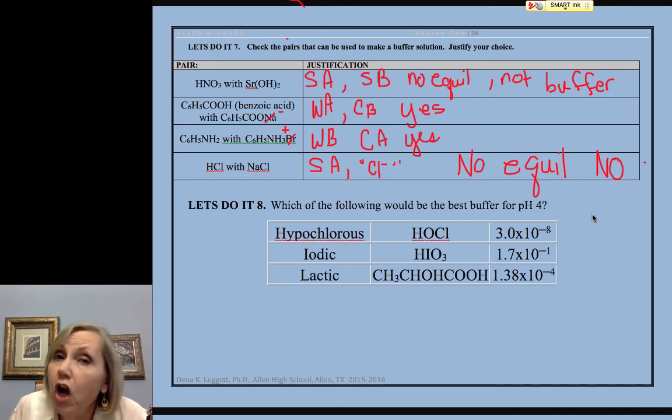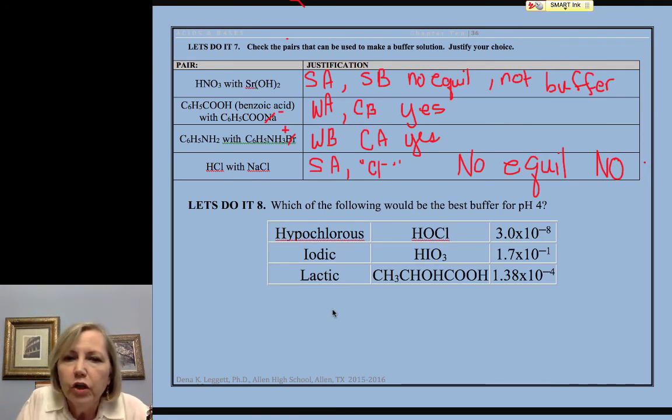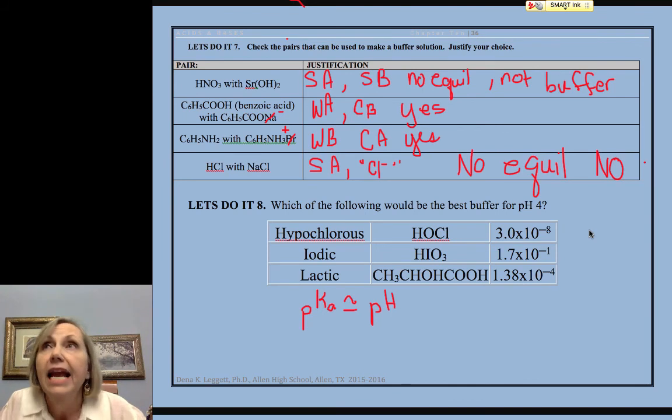Now, how do we start deciding what's going to be the heart of our buffer system? Well, you want the pKa of your buffer to be approximately or close to the pH at which you want to buffer. So let's say I wanted to do an experiment, and I want to control my pH, and it's a biological system, and I want the pH controlled at pH 4.